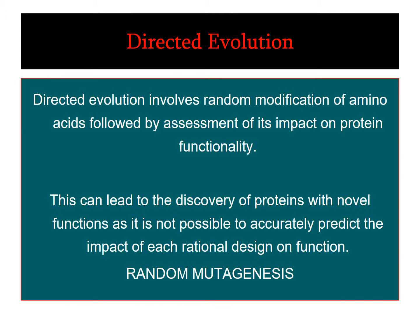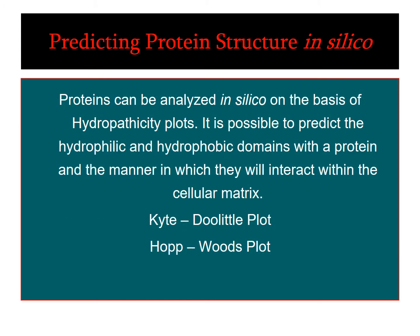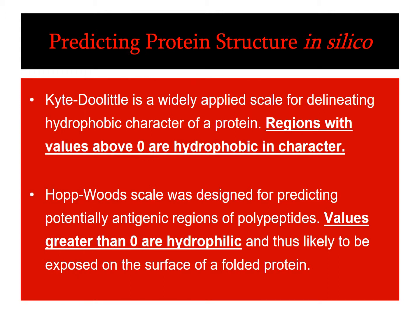In addition to random design, directed evolution is also one of the approaches taken when designing proteins. Protein structure can be predicted in silico using the Kyte-Doolittle plot and the Hopp-Woods plot. The Kyte-Doolittle prediction scale relies on prediction of certain regions based on values above zero being considered hydrophobic in character, and values greater than zero being considered hydrophilic in nature when utilizing the Hopp-Woods scale.